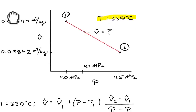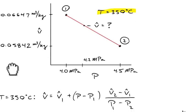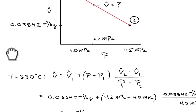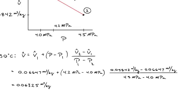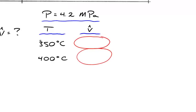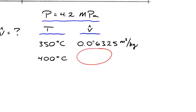Using the linear interpolation equation, with P1 and P2 known and inputting a pressure of 4.2 megapascal at 350 degrees C, the result is a specific volume of 0.06325 cubic meters per kilogram. We enter that value into the table we're building: 0.06325 at 350 degrees C and 4.2 megapascal. This is one of the three interpolations we need to do.